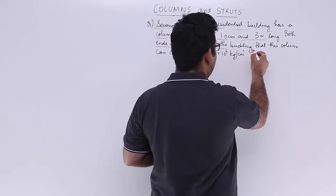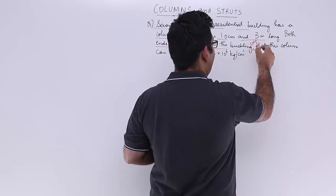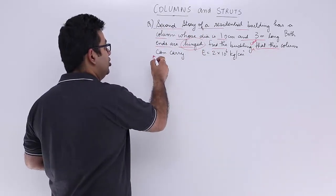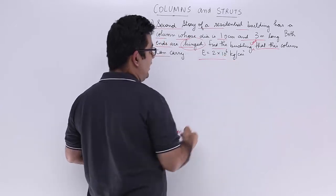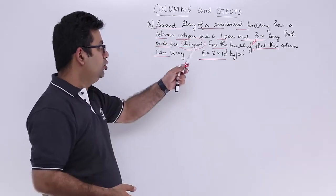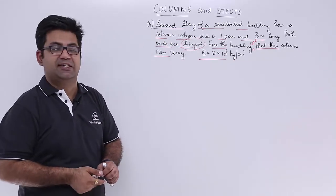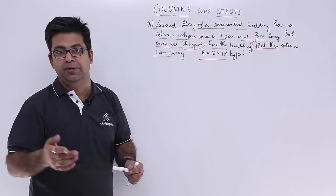Find the buckling load, there has to be a load over here. Find the buckling load that this column can carry when the Young's modulus is 2 × 10 to the power 6 kg per centimeter square.